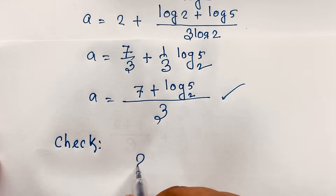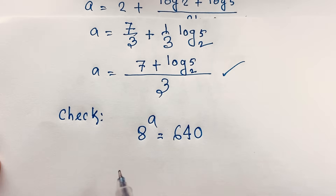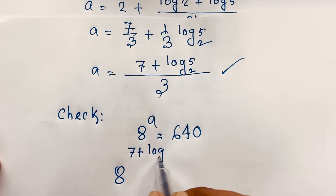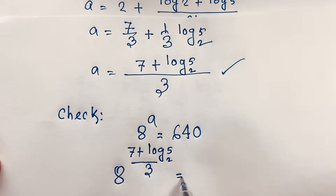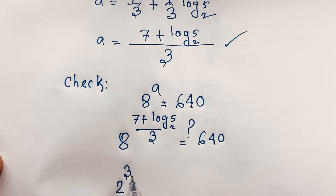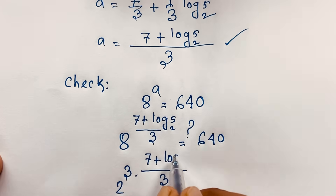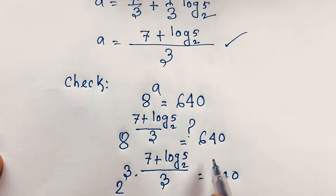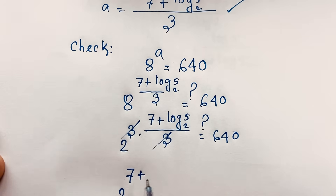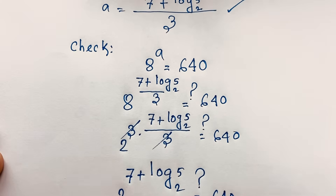Let's verify. Our equation is 8^a = 640, so we compute 8^((7 + log₂5)/3). Writing 8 = 2³, we get 2^(3 · (7 + log₂5)/3) = 2^(7 + log₂5). The 3s cancel out.